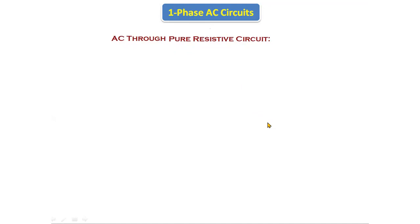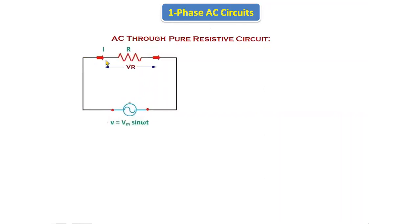Now we are taking one simple circuit which is having only a resistor — it does not have any inductor and capacitor. We are giving the AC supply to the pure resistive circuit. This is the current passing through the circuit and this is the voltage across the resistor, that is VR.